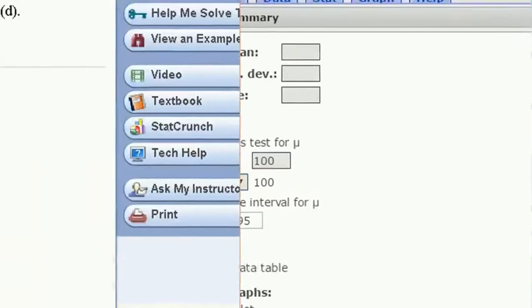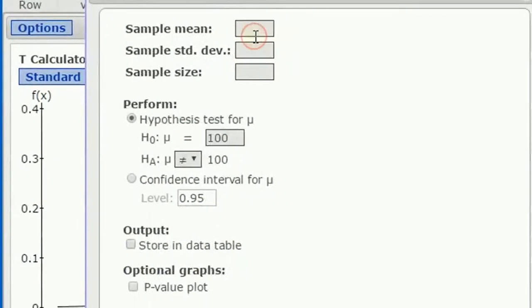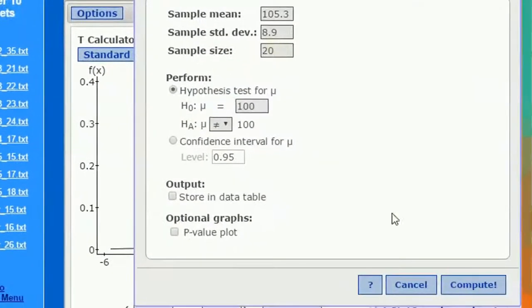My sample mean is given here, let's see, 105.3. My sample standard deviation is 8.9, and my sample size is up here, 20. So put that in.